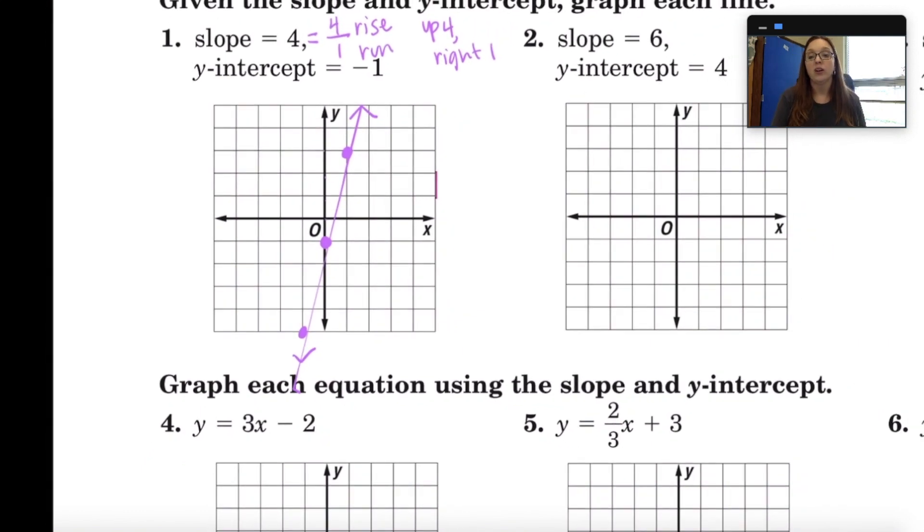Now remember when we first talked about graphing linear equations, we said that the points on the line are solutions to the equation. So we've identified three solutions to the equation. There are more because I could continue moving up four, right one, up four, right one, and so on to generate as many points as I wanted. But I've generated as many points as that will fit on this graph.